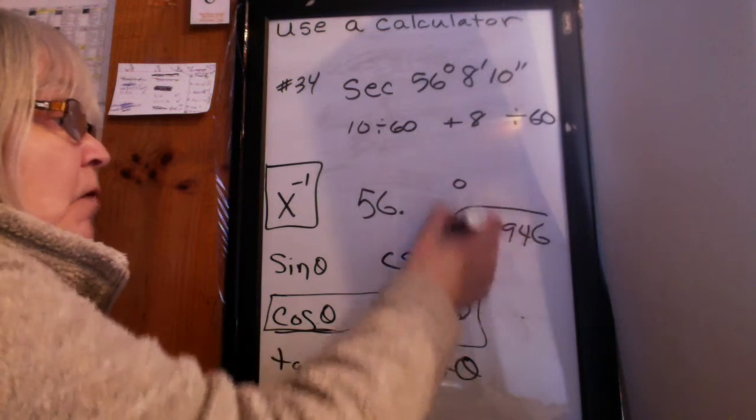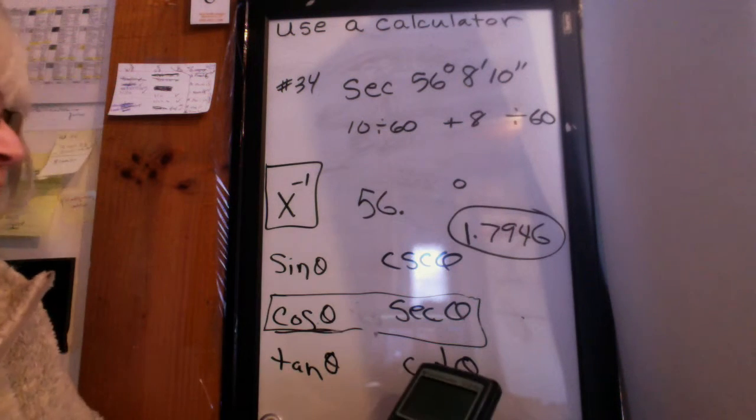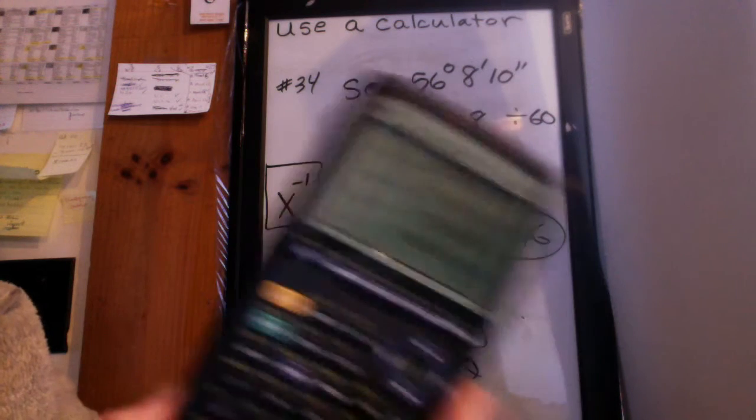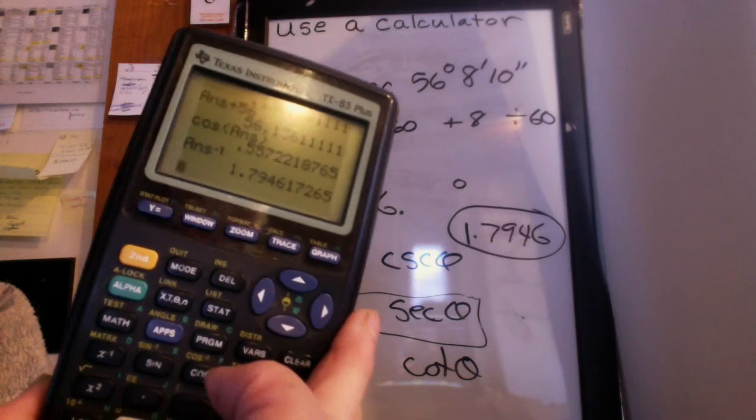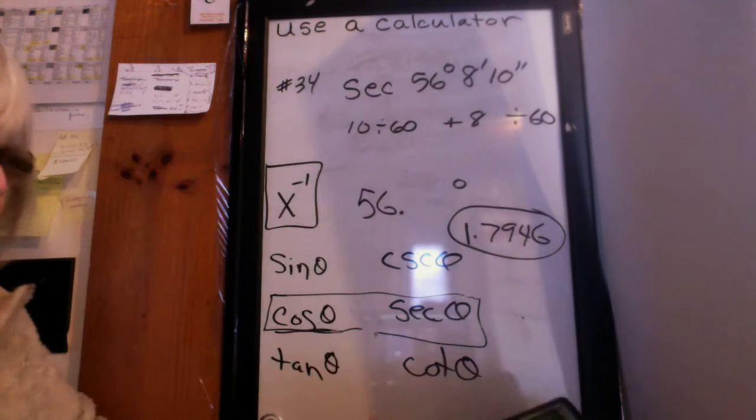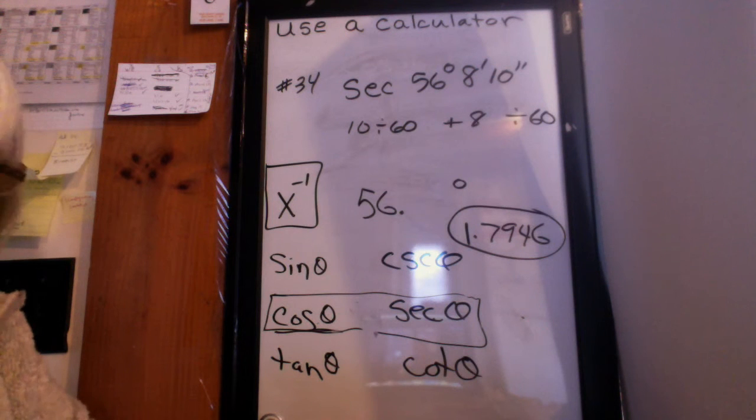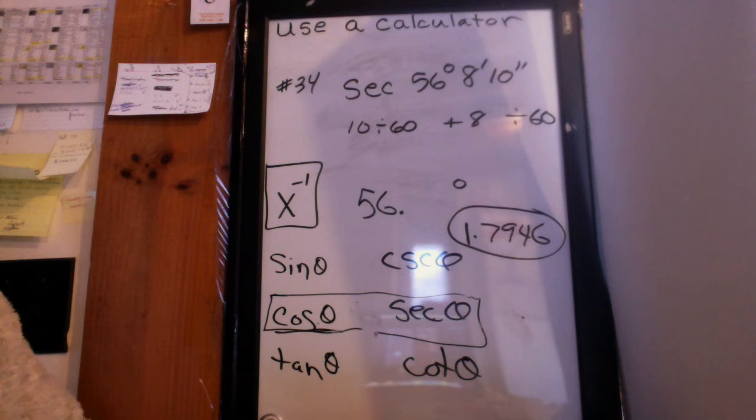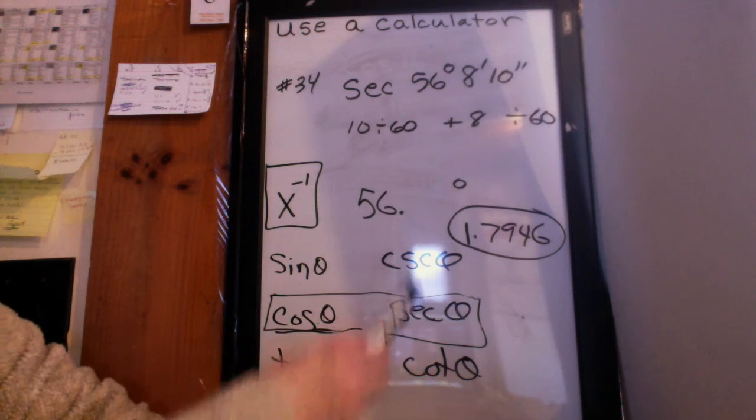And you should be able to get the final answer as 1.7946. And again, I'm always rounding to four decimal places. It was 7, 9, 4, 6, 1, 7, 2, 6, 5, if you want to check it on your own calculator. So that's how to do the angles that are reciprocal angles.